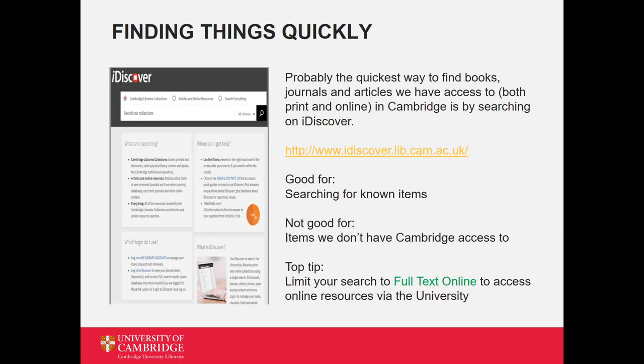iDiscover is the University of Cambridge catalogue and the quickest way to find books, journals and articles we have access to. Let's go and take a look.